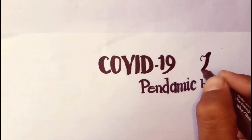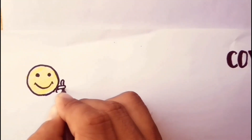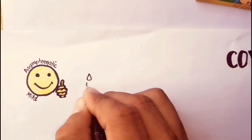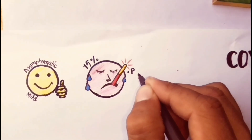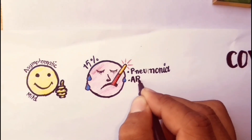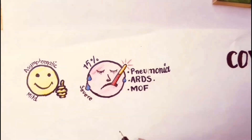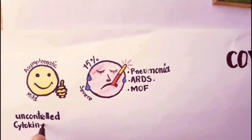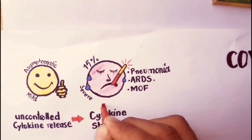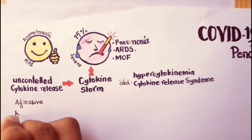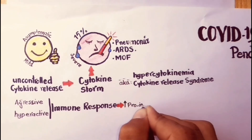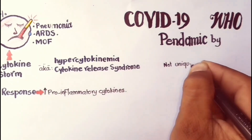COVID-19 is a rapidly spreading global threat that has been declared as a pandemic by the WHO. The majority of SARS-CoV-2 infected patients remain asymptomatic or develop mild symptoms. However, about 15% of patients — largely older and with comorbidities — develop severe disease with interstitial pneumonia and/or acute respiratory distress syndrome, as well as multiple organ failure, widely believed to result from uncontrolled cytokine release leading to cytokine storm.